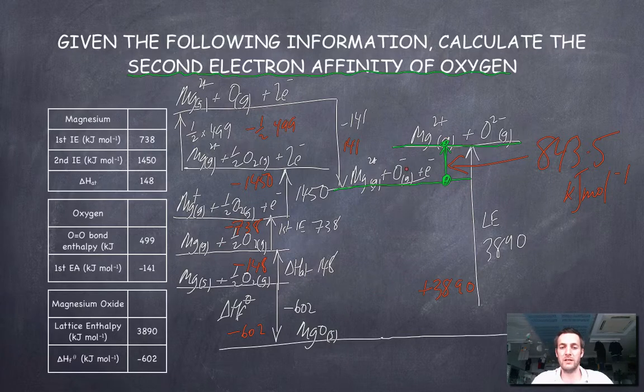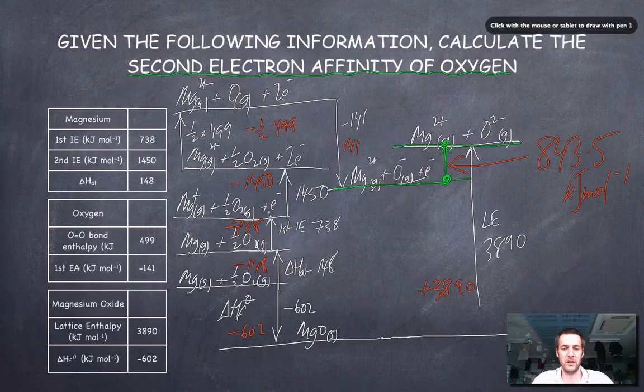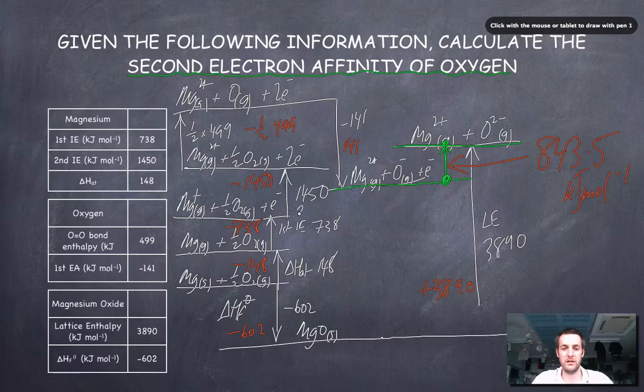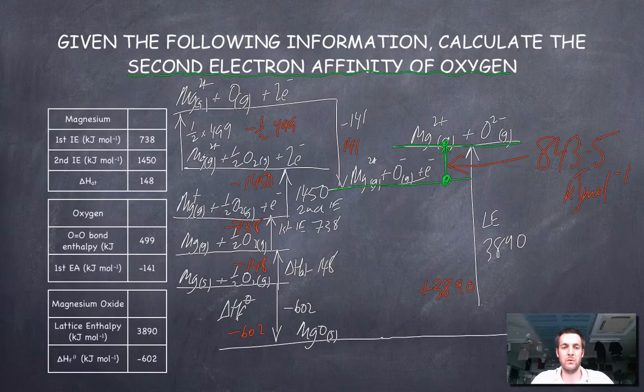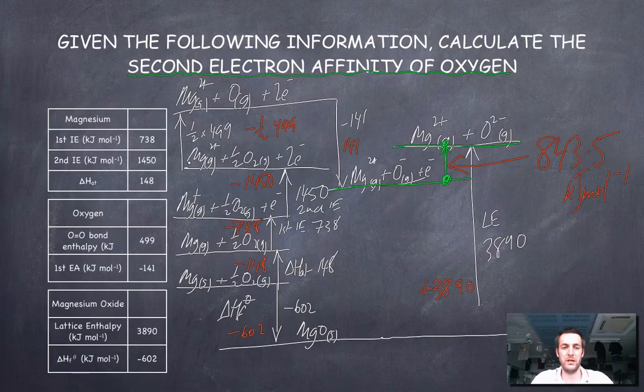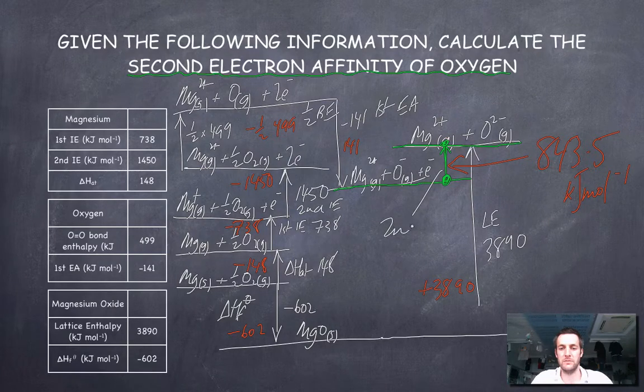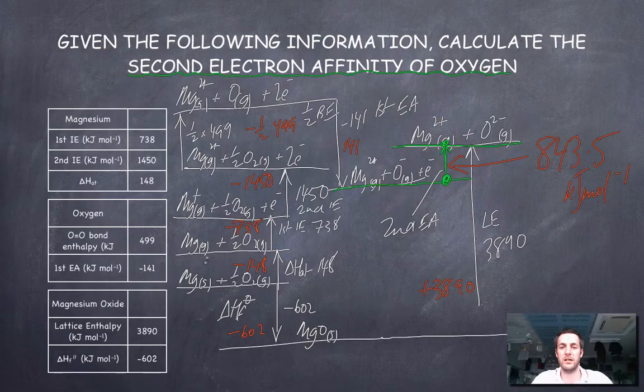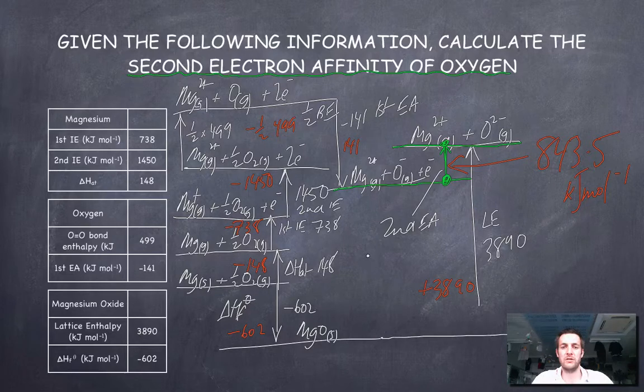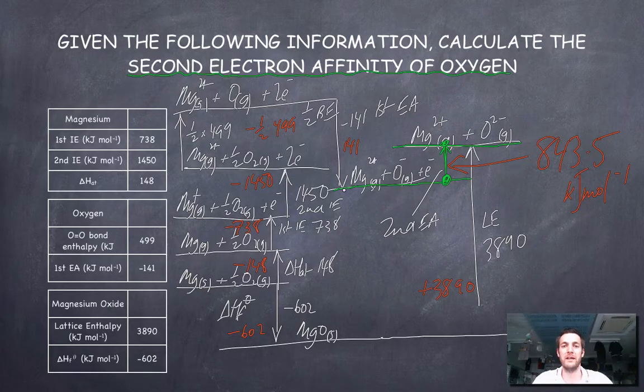So we've not only constructed and labelled our Born-Haber cycle. We've missed out this one here, the second ionization energy of magnesium. This was half the bond enthalpy of oxygen. This was the first electron affinity, and this was the second electron affinity. Not only have we labelled it and shown what's there at each stage, we've also used it to calculate an unknown value. That's the sort of skills that you need to have. It's very unlikely that you'll have to do all of that in an IB exam, but any particular stage of it, you ought to be able to do.